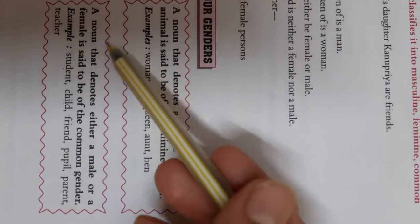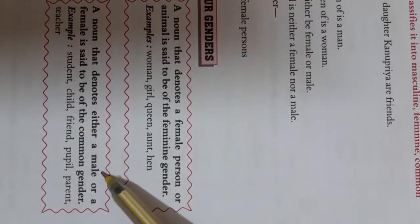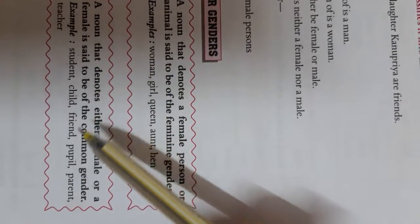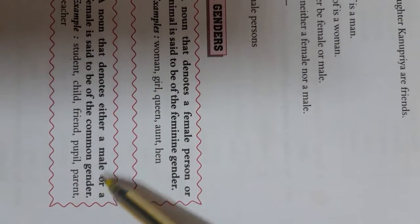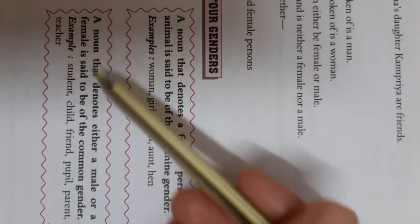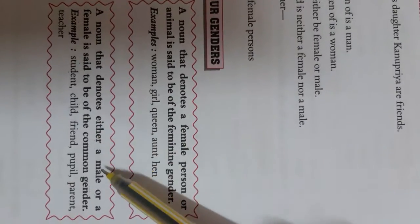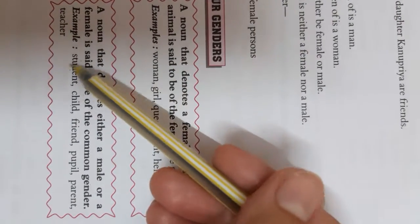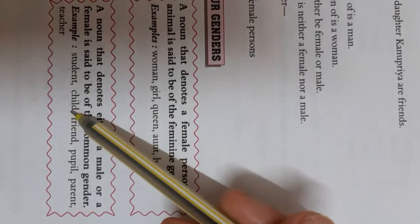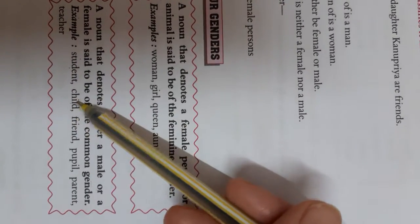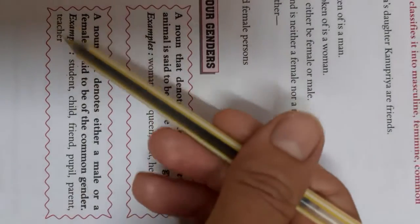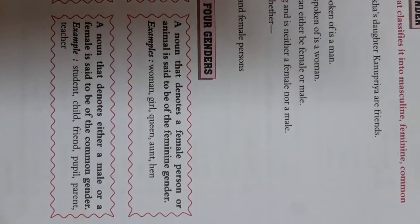A noun that denotes either a male or a female is said to be the common gender. Student — it can be male or female. Child — male or female. Friend, pupil, parent, teacher — these are the common gender.